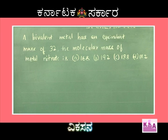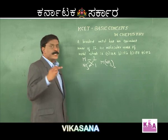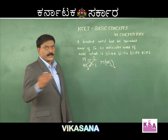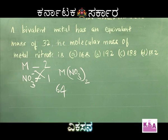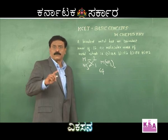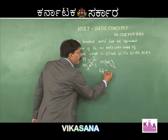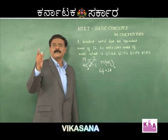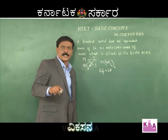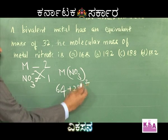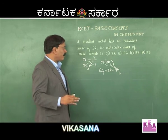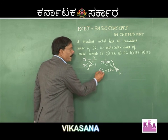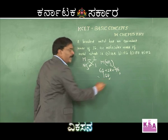What else is said? The equivalent mass of the metal is 32 and since its valency is 2, the atomic mass of M will be 64. The atomic mass of nitrogen is 14; 14 into 2 would be 28. Atomic mass of oxygen is 16; 16 into 3 is 48, and 48 into 2 is 96. When you add up all these numbers it will be 64 plus 28 plus 96, giving 92 plus 96.